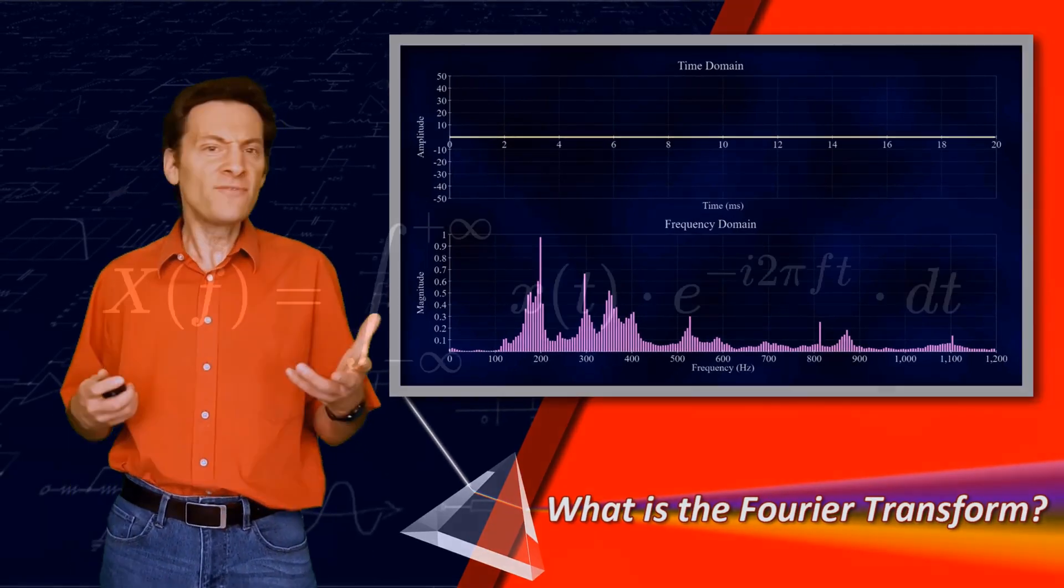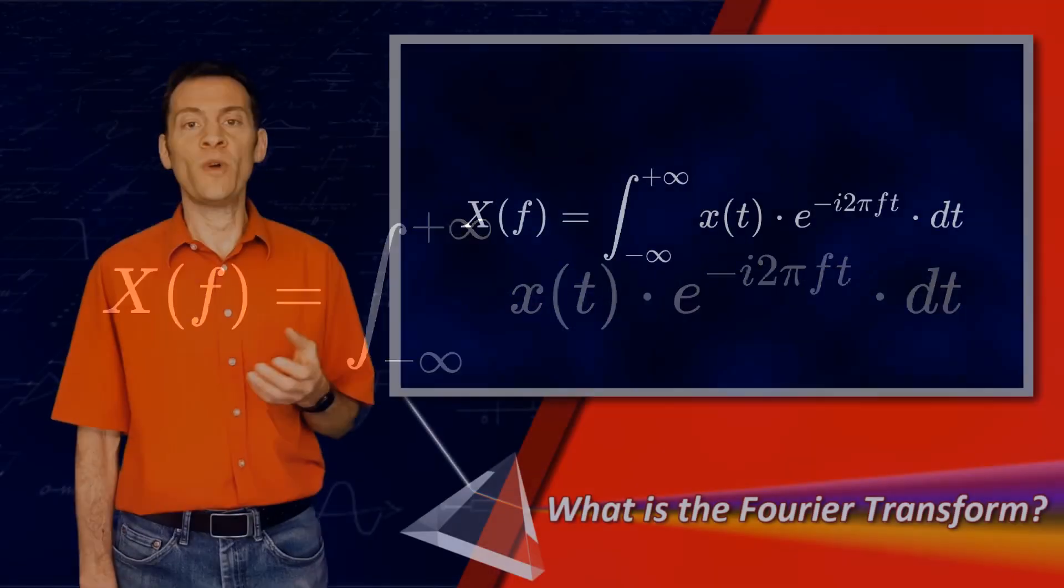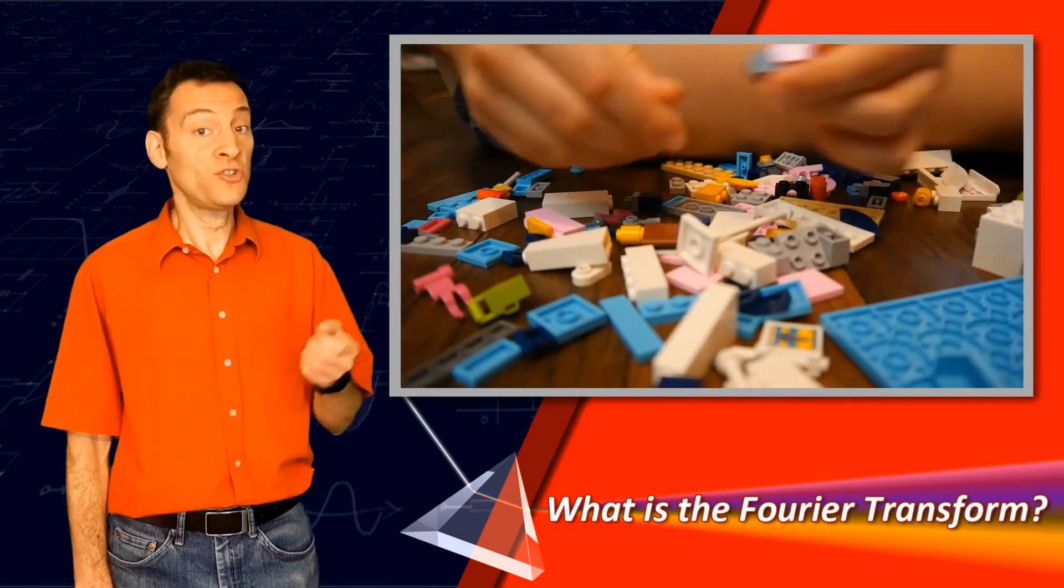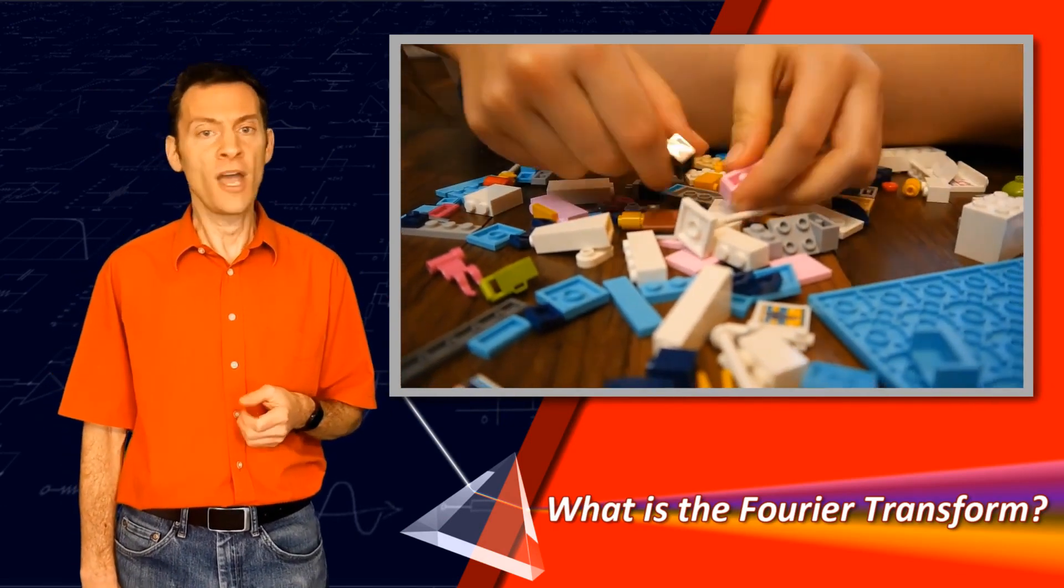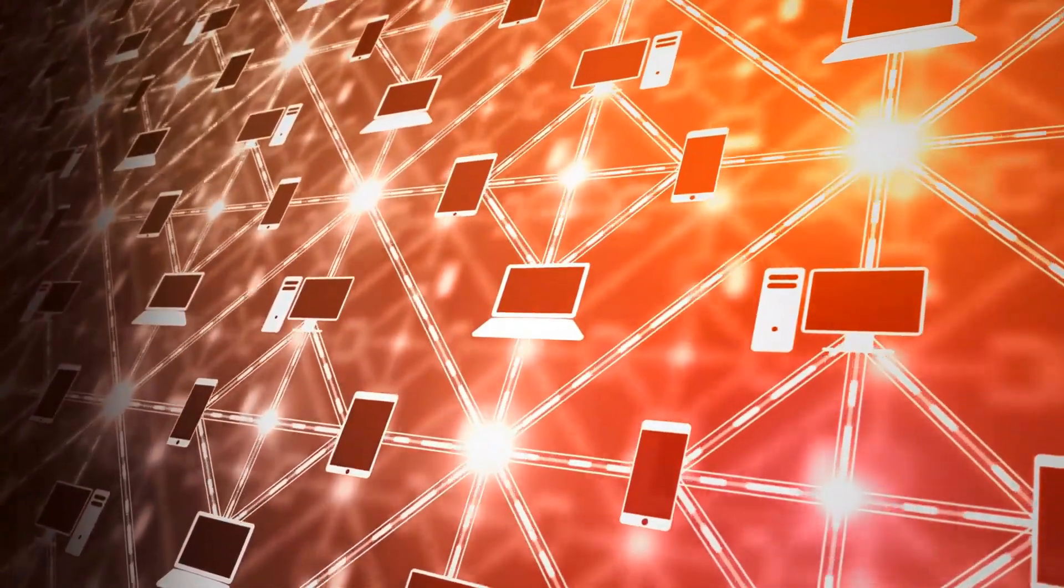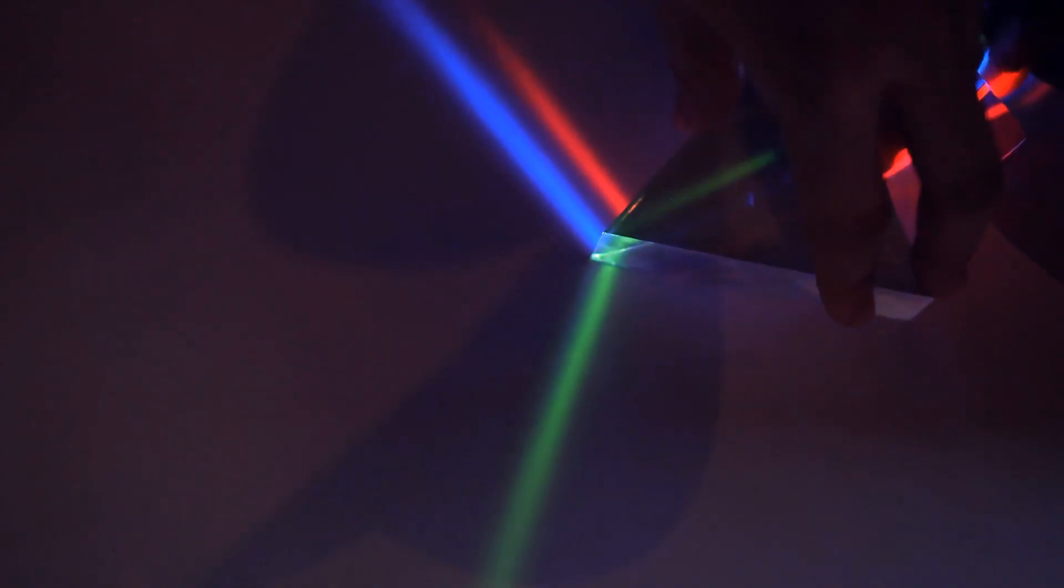So why is the Fourier transform so useful? Once you know which sinusoids a signal is built out of, there is no end to what you can do with that information. For example, you can compress it, making it easy to store or send over a network. You could filter it and get rid of frequencies you don't want.